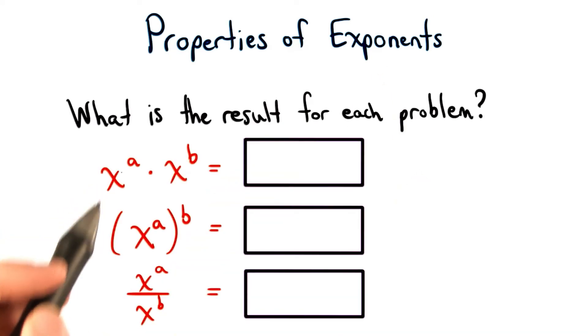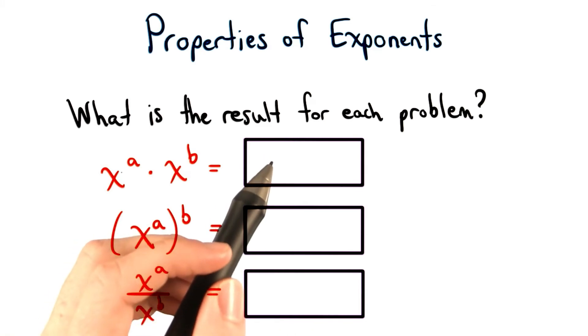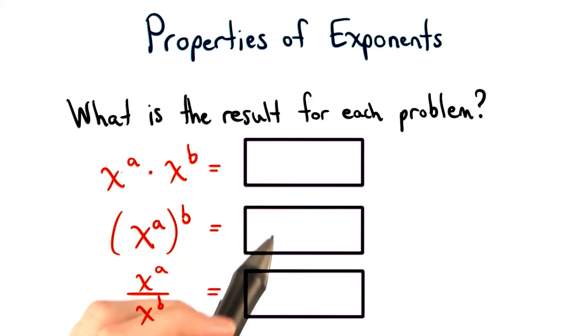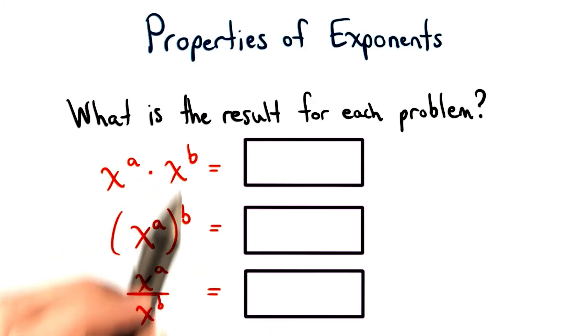What's the result of each of these operations? You should write your answer using x as the base, and then using some combination of a and b for the exponent.